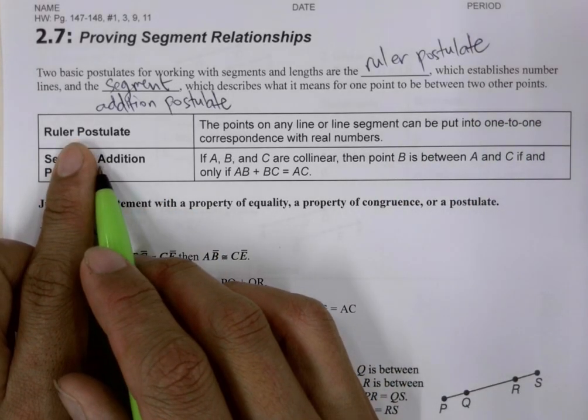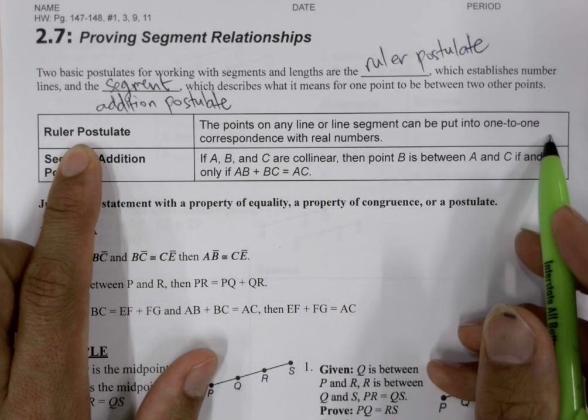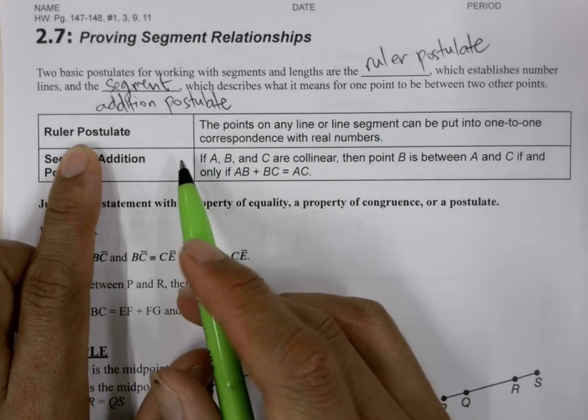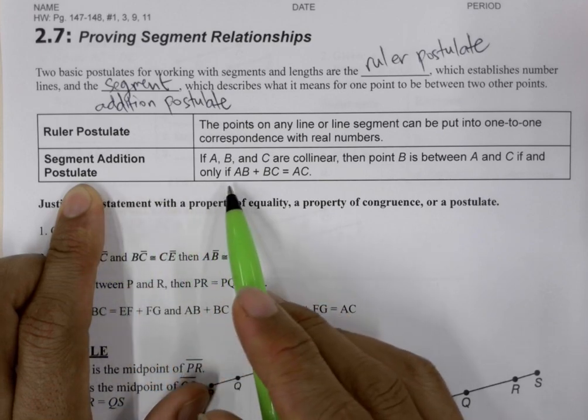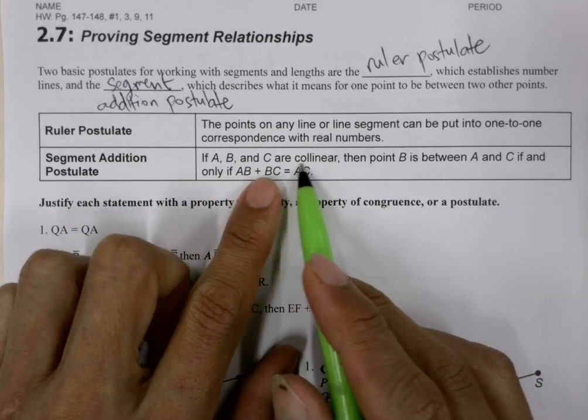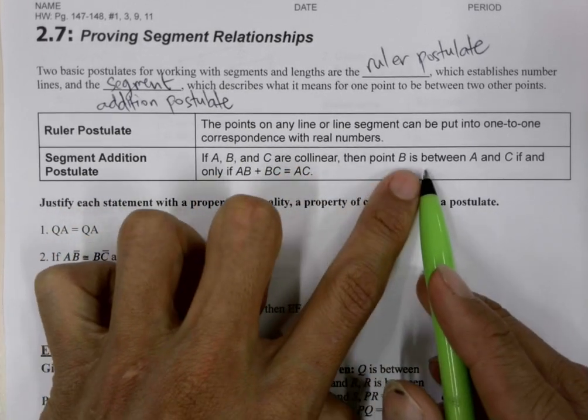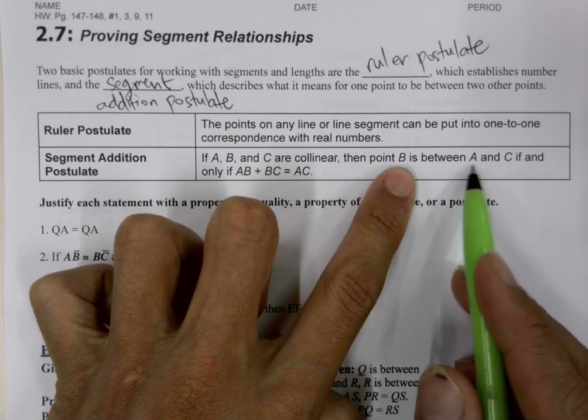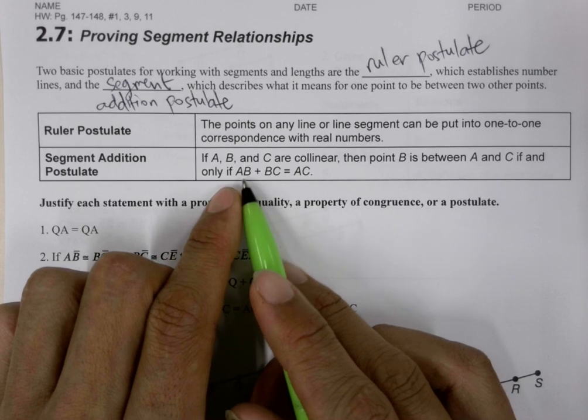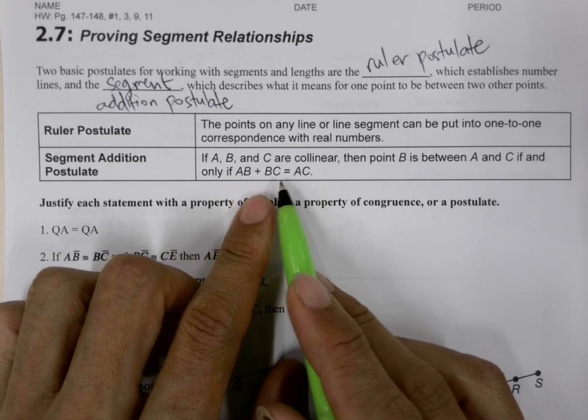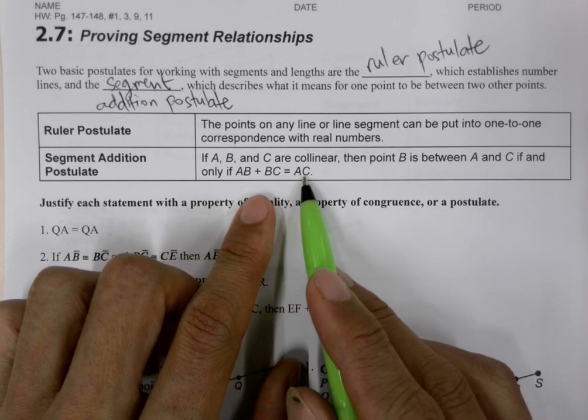Ruler postulate lets us measure on a ruler, a figure on a ruler. Segment addition postulate lets us say that if A, B, and C are collinear, and point B is between A and C, then measure of line segment AB plus measure of line segment BC is equal to the measure of AC.